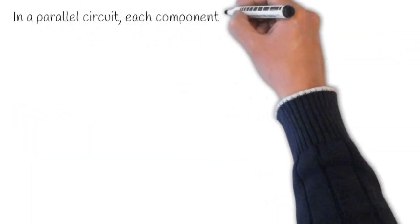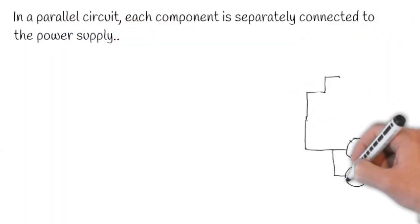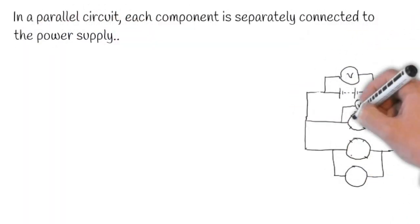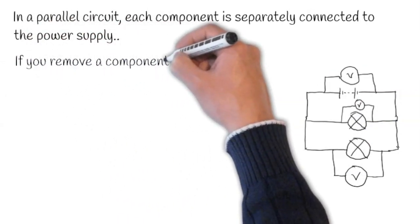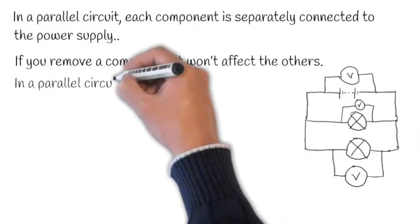In a parallel circuit, each component is separately connected to the power supply. I'm drawing a parallel circuit for you here. If you remove a component, it won't affect the others.